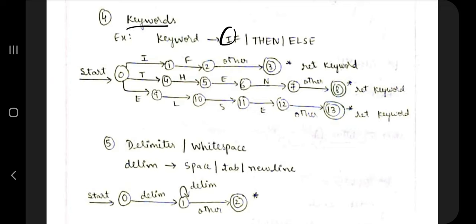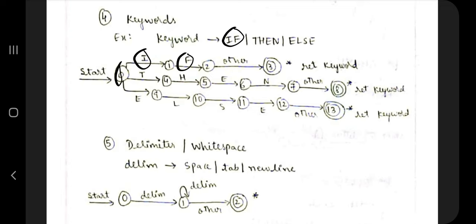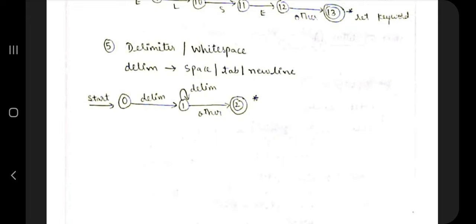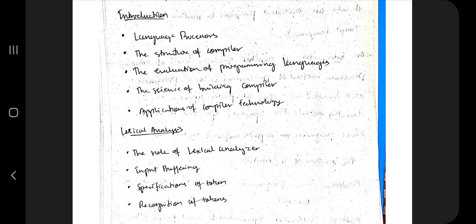For keywords like 'if', 'then', 'else', you draw a path for each letter: for 'if' — start, then 'i', then 'f' reaching the final state; for 'then' — 't', 'h', 'e', 'n'; for 'else' — 'e', 'l', 's', 'e'. For delimiters, you handle newline ('\n'), and for white spaces, tab ('\t') or blank space, you have one compulsory occurrence followed by any number of additional ones. Module two is now complete.